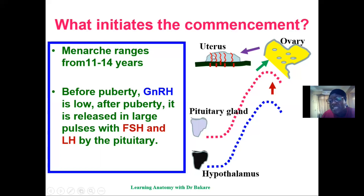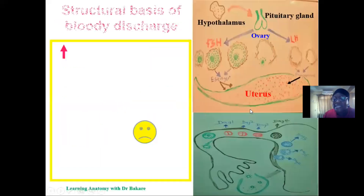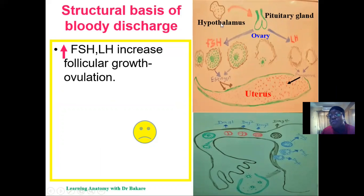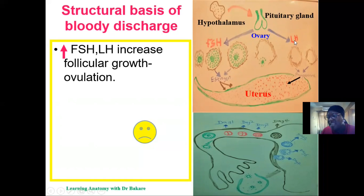It is the stratum functionalis that becomes shed off during menstruation. Since spiral arteries are embedded within this region, it is not just the tissue of the stratum functionalis but also the spiral arteries that are shed off along with it — and that is why you have a bloody discharge. This is the basic concept behind menstruation.